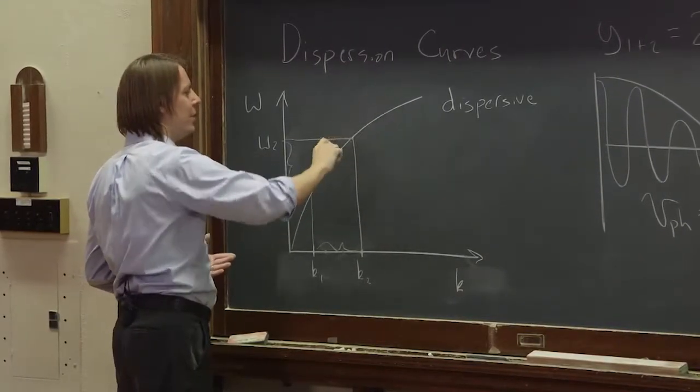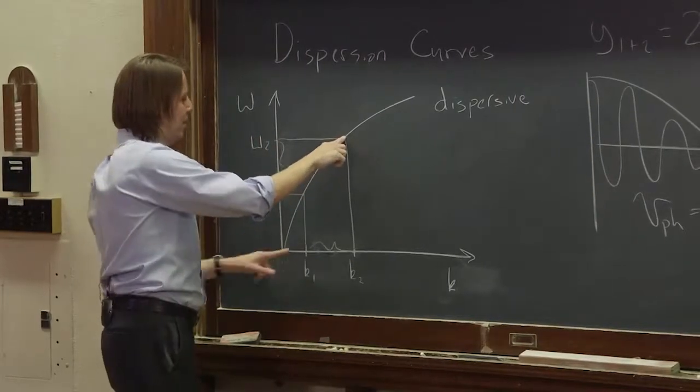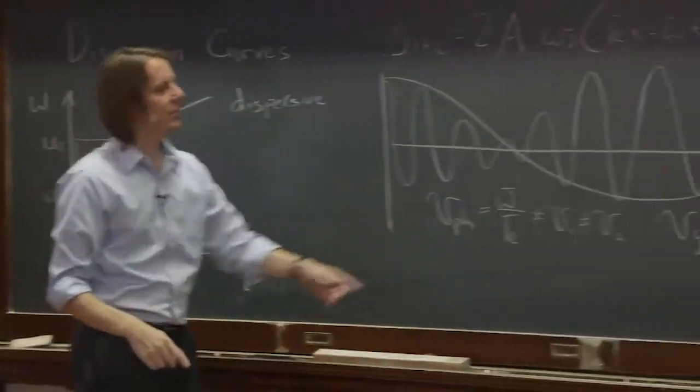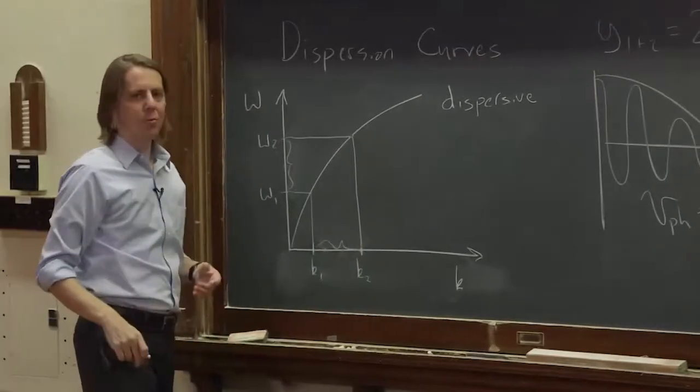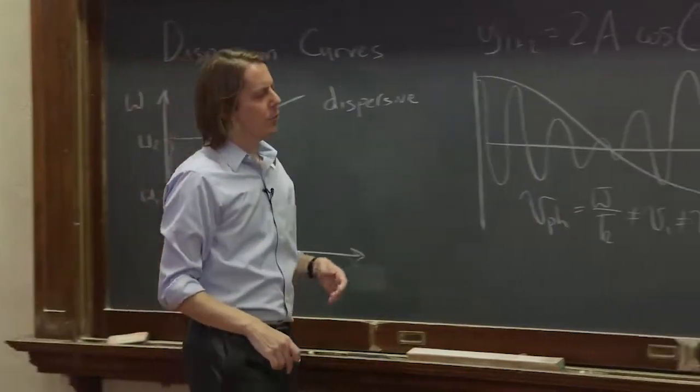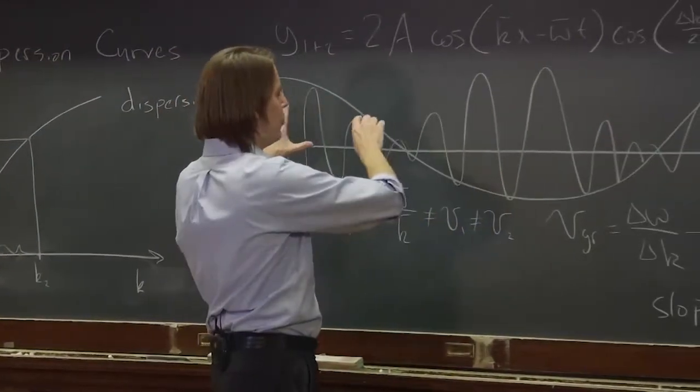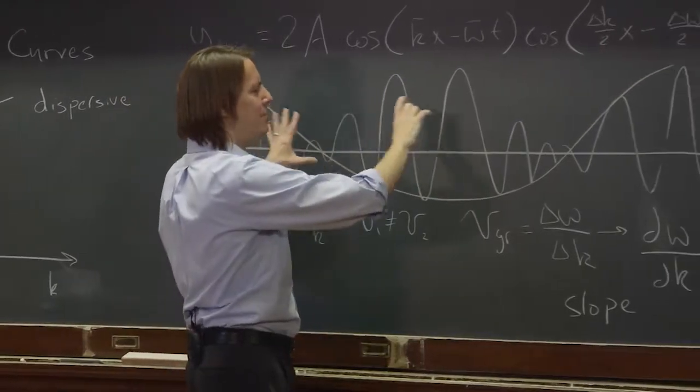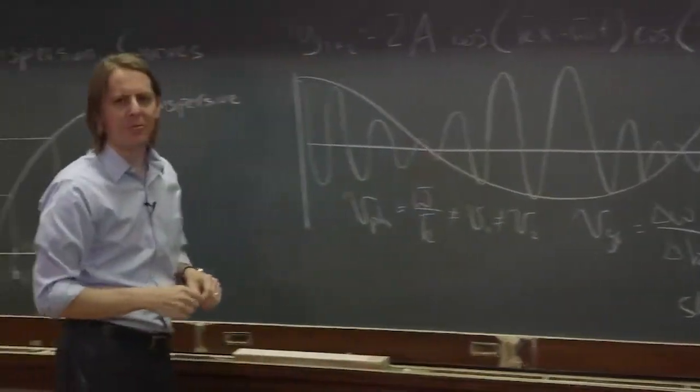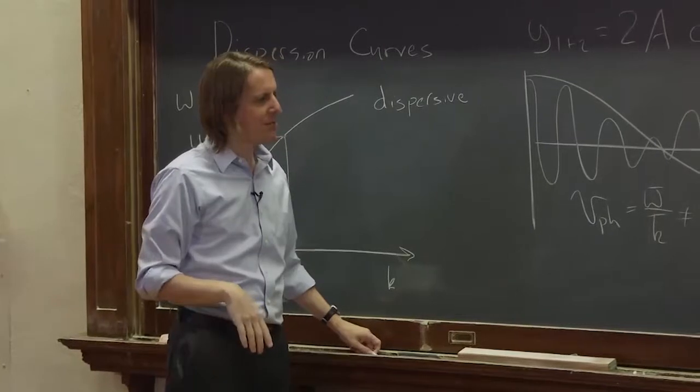You could define the slope of the line, or you could define the points that make up the line. The points that make up the line are the phase velocity. The slope is the group velocity. So the group velocity can be different than phase, and group describes how fast the beat pattern moves, and phase describes how fast the oscillations that make up the beat pattern move.